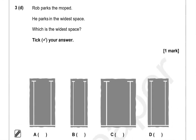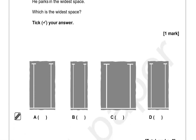Rob parks a moped. He parks in the widest space. Which is the widest space? Tick your answer. Looking at them: this is probably quite narrow, this one as well, this is a bit wider, and this is the widest — option C.